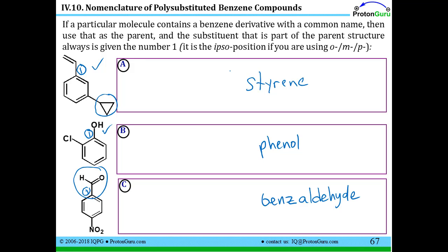And since these are all disubstituted benzene compounds, I have a choice to use either the numbering. So I have a substituent at position three, that substituent is cyclopropyl. So I can call this 3-cyclopropylstyrene, or I can use the ortho-meta-para designation. And I can say this is meta-cyclopropylstyrene. You write out the m-dash and you read it meta-cyclopropylstyrene.